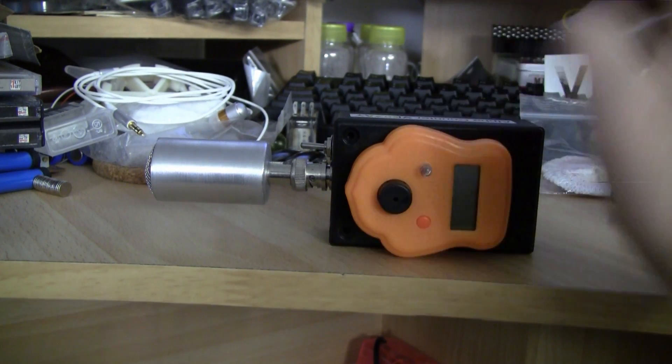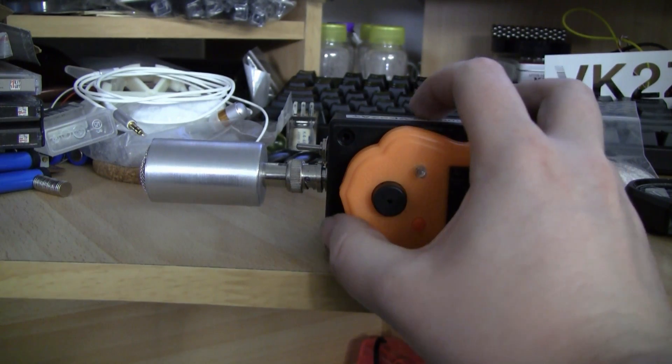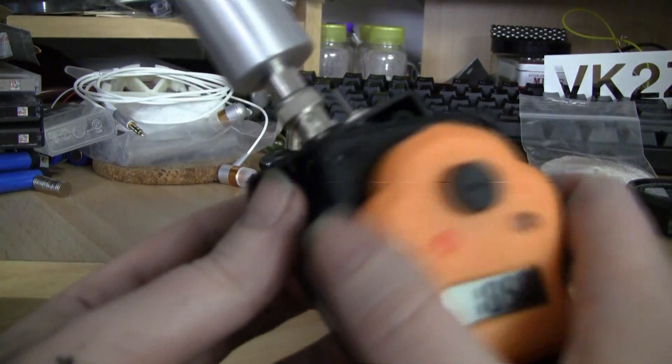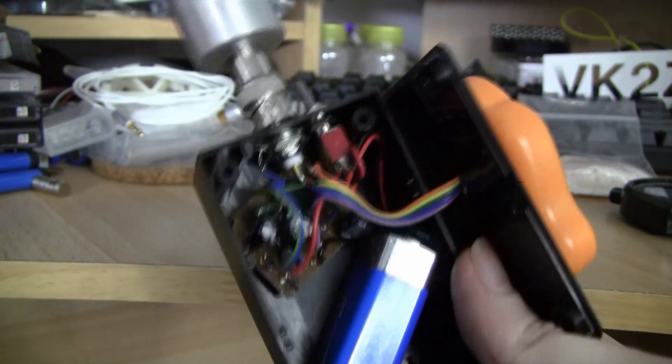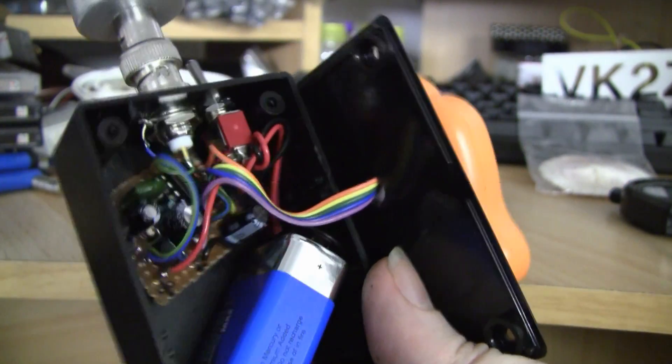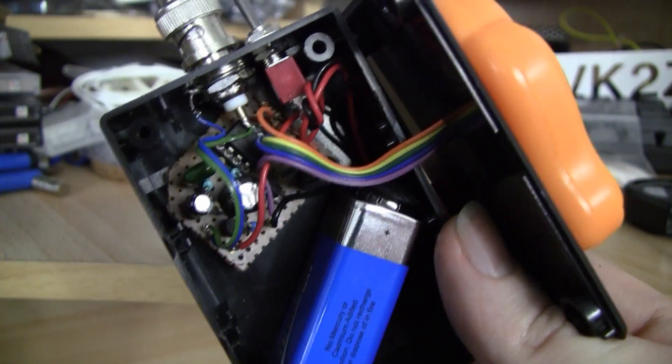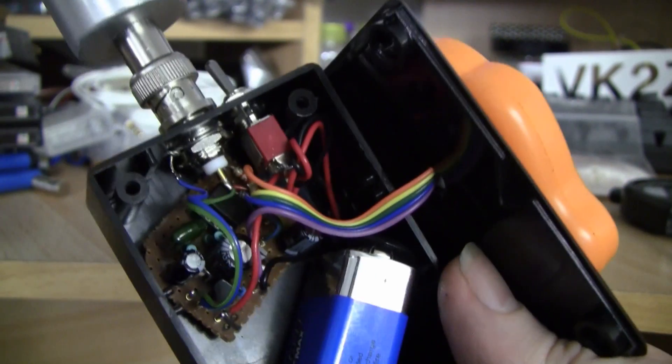Alrighty, let's take a look inside there isn't a whole lot to see but might as well have a look anyway. Just some ribbon cable going to the counter module, in there we've got a TL072 op amp, resistors capacitors galore.